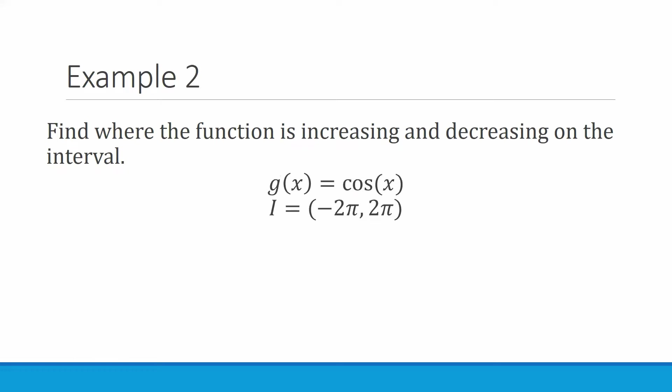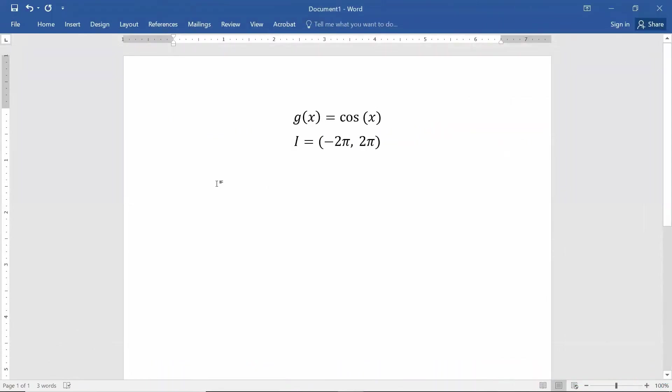This time my function is cosine of x and my interval is from negative 2π to positive 2π. The first step is to find where the critical values are. In this case my g prime would be negative sine of x. Derivative of cosine is negative sine.